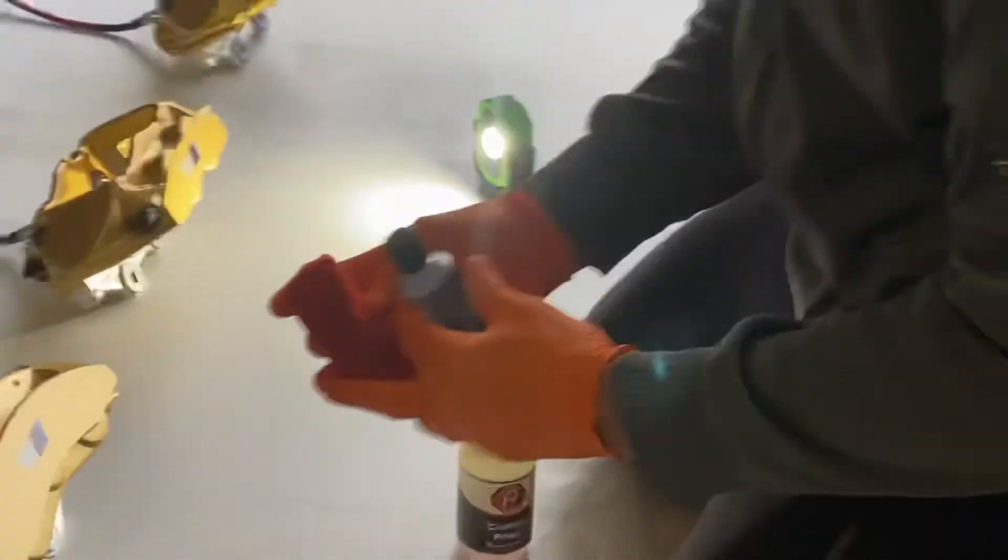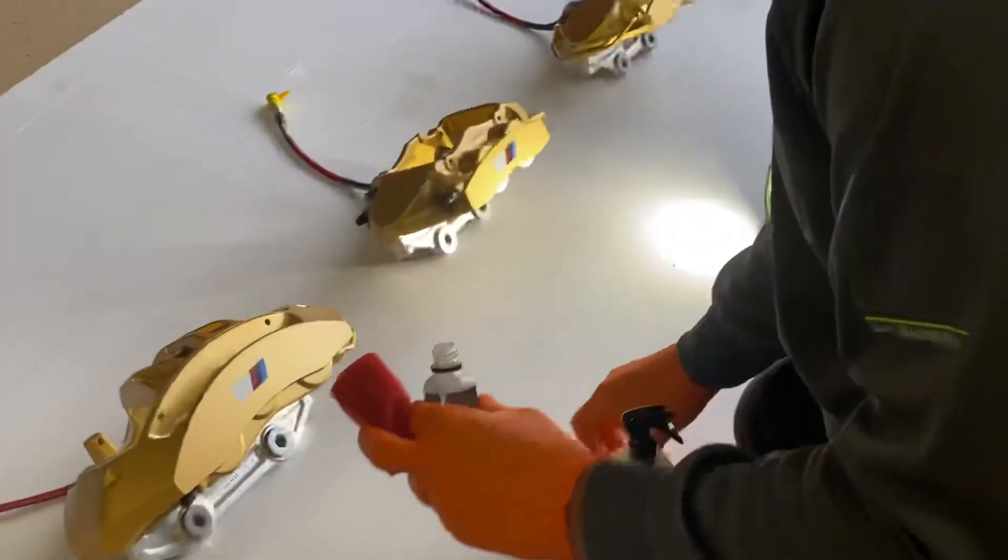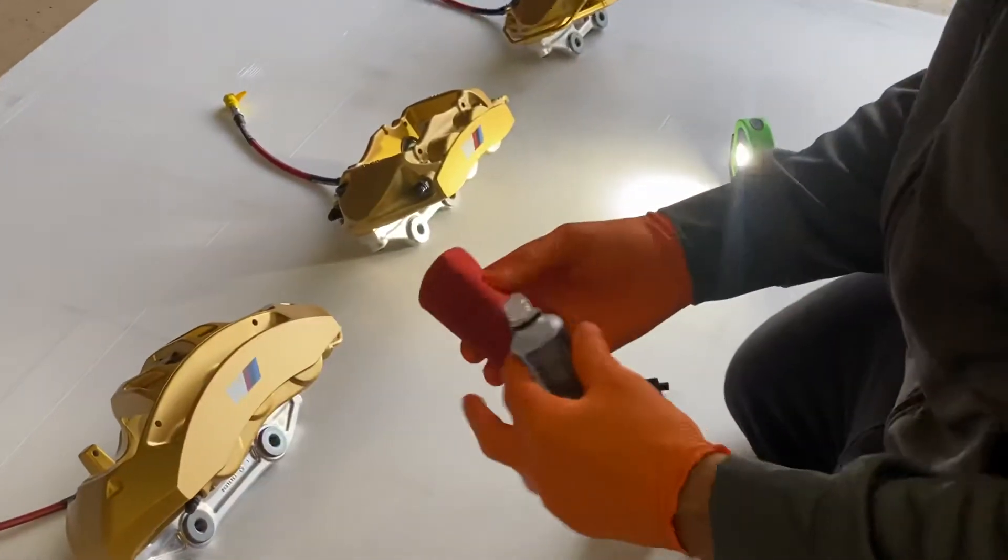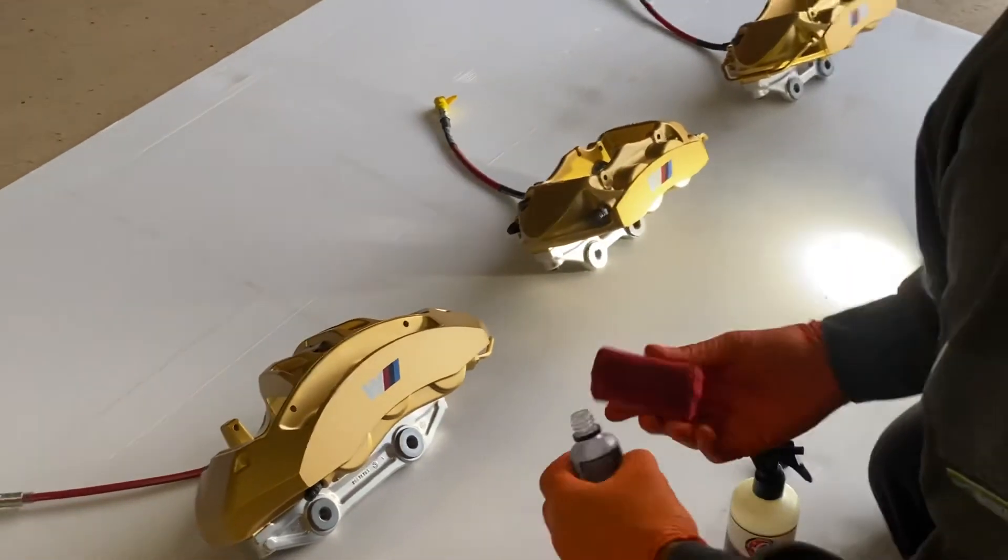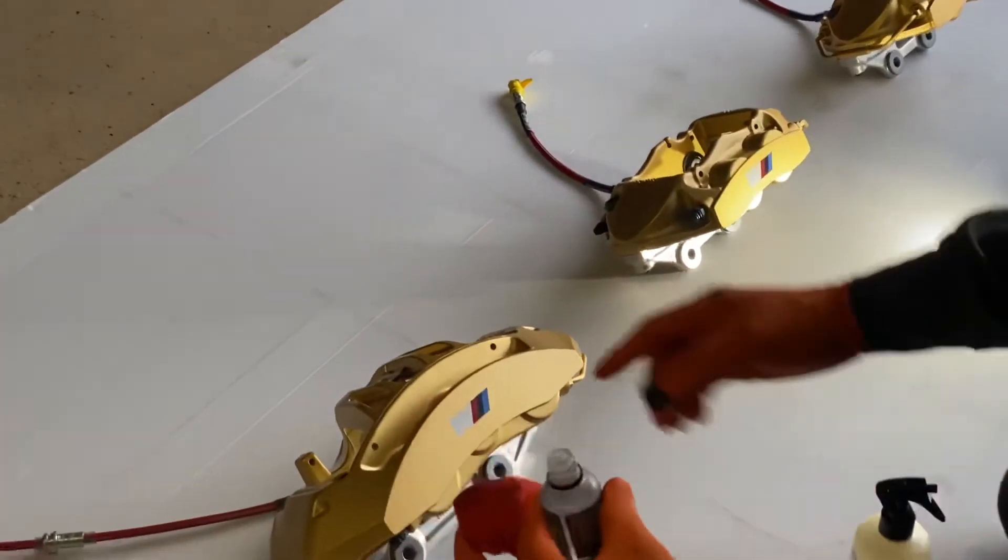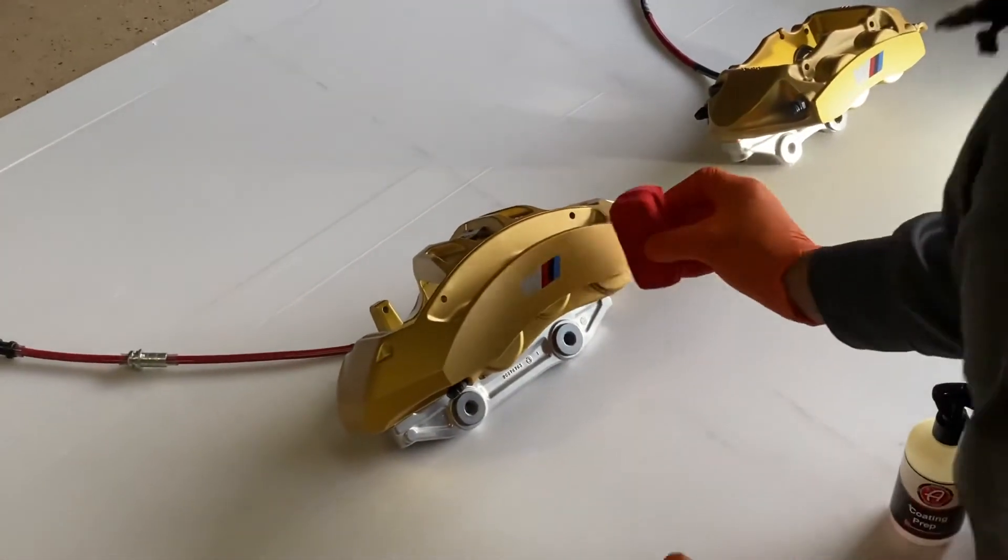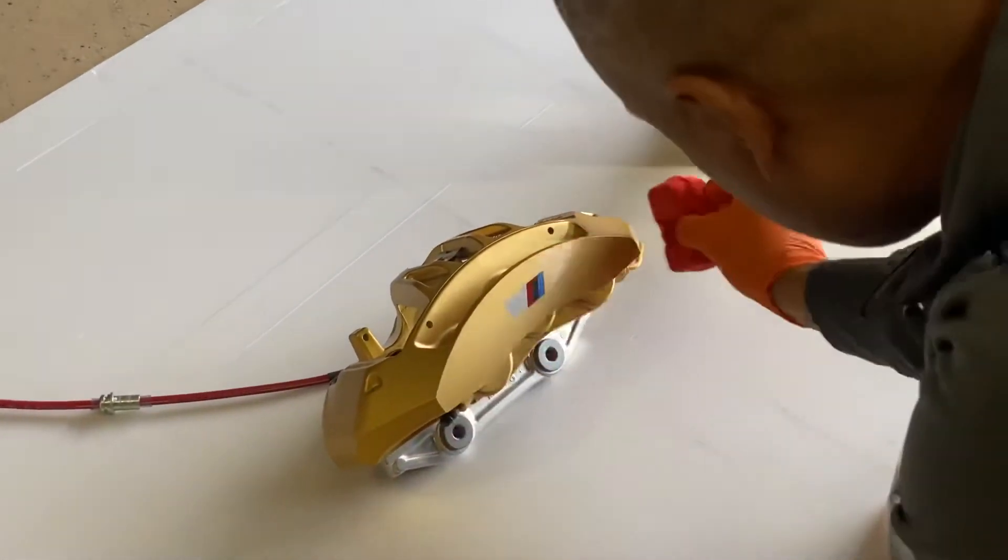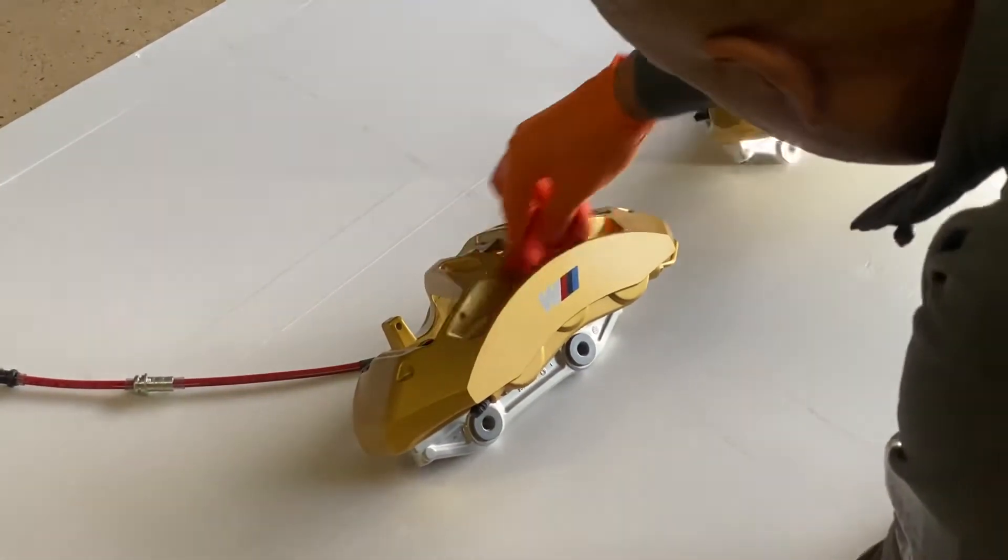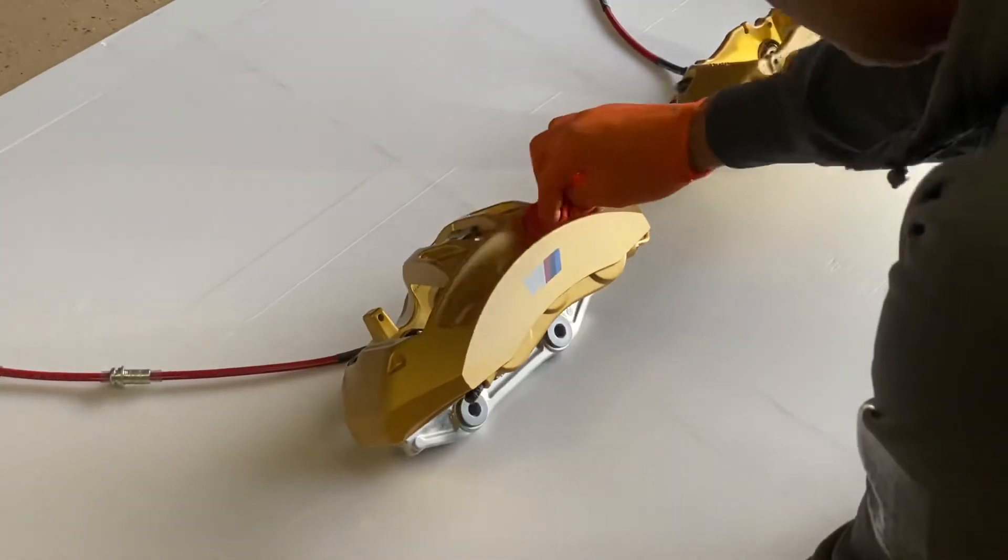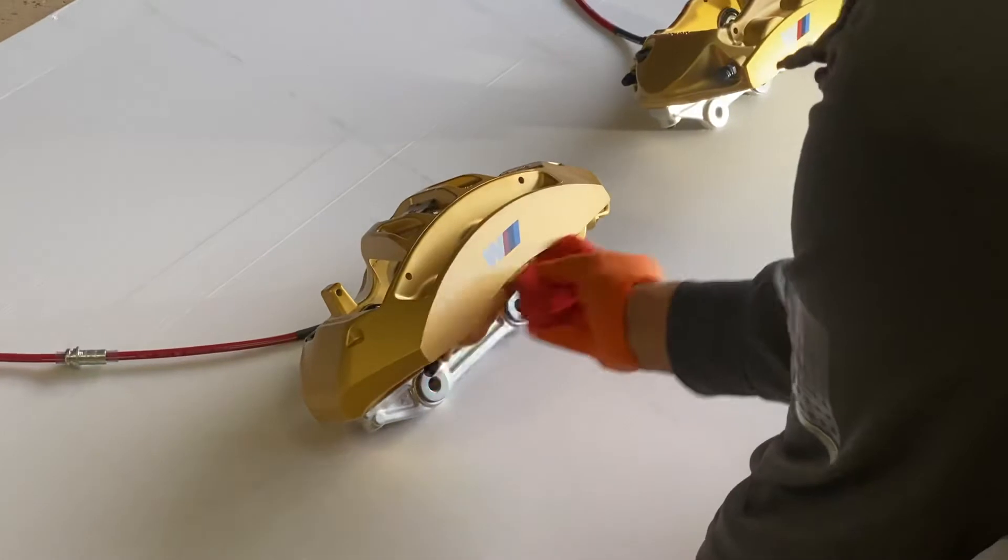All you got to do is get one of these applicator pads right here and you just dab it a little bit. You got to make sure you close this thing back because it will start getting real hard. You just apply it. I think you're supposed to wear a mask or have it in a ventilated area, which is the garage and it's wide open.